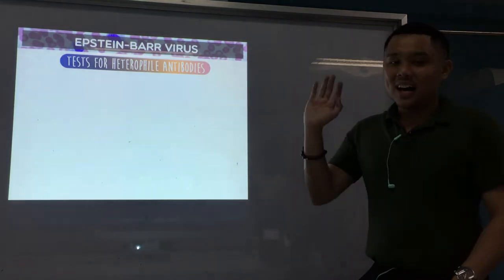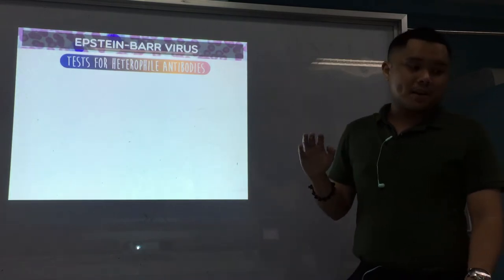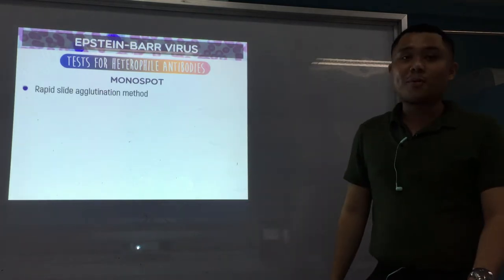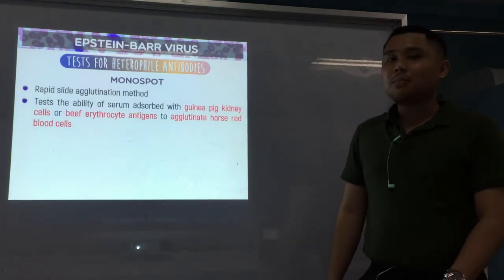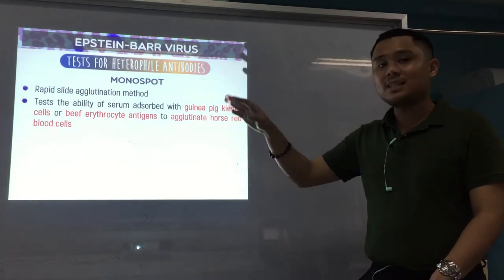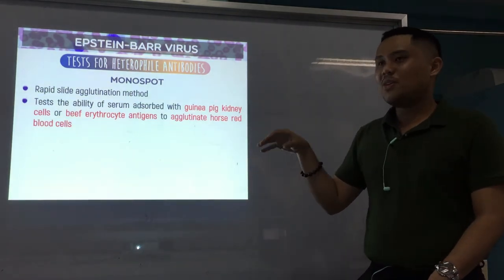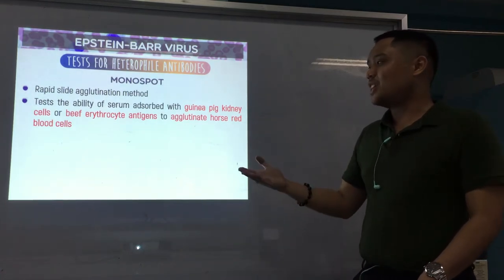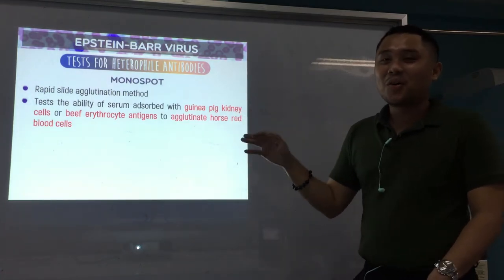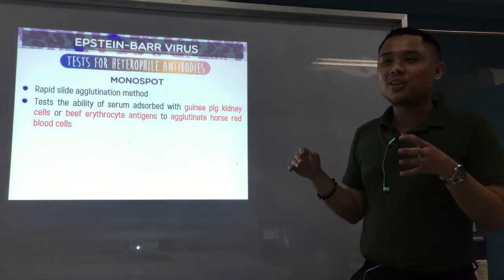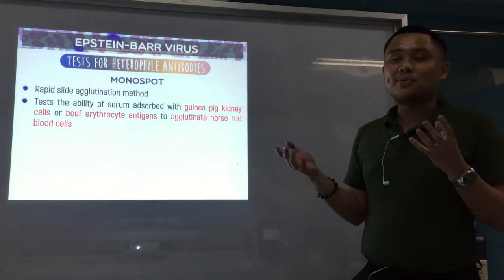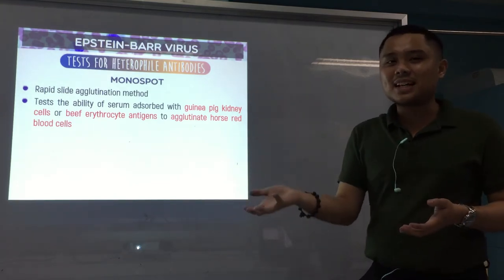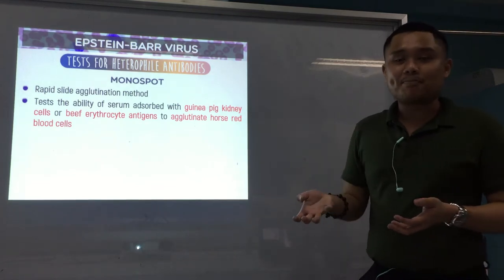For example, if I'm a human and I have heterophil antibodies, these antibodies can react with antigens coming from the horse, from the sheep, from guinea pig, from bovine. So, we'll now go to the different tests to determine these antibodies. The first one is what we call your Monospot. Your Monospot is a slide agglutination method, and it tests the ability of the serum absorbed with guinea pig kidney cells, or BIF erythrocyte antigens to agglutinate horse red blood cells. It's easy to perform and can also be interpreted easily.